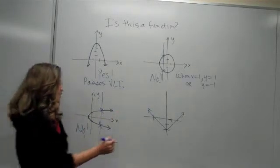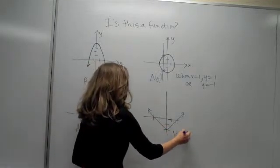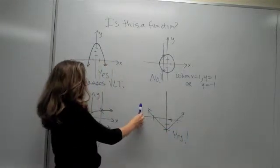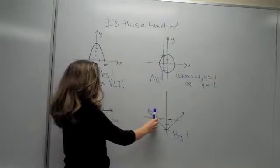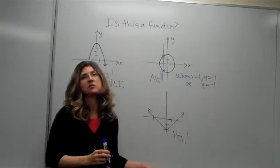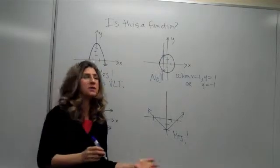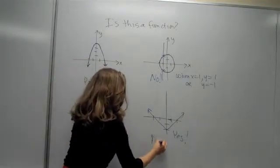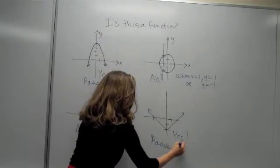Is this a function? Yes. Because any vertical line that you draw will intersect the graph, but at most once. So there are no x values that sometimes give you one y and sometimes give you another one. This one passes the vertical line test.